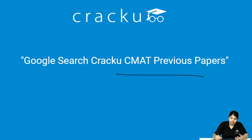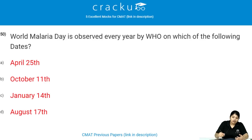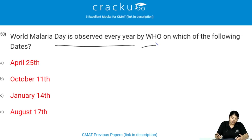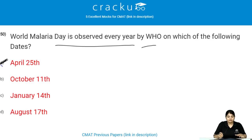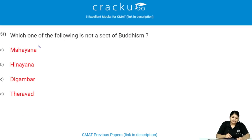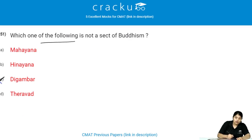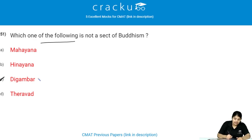World Malaria Day is observed every year on April 25th. Which one of the following is not a sect of Buddhism? Digambara is not a sect of Buddhism; it is one of the two major schools of Jainism.